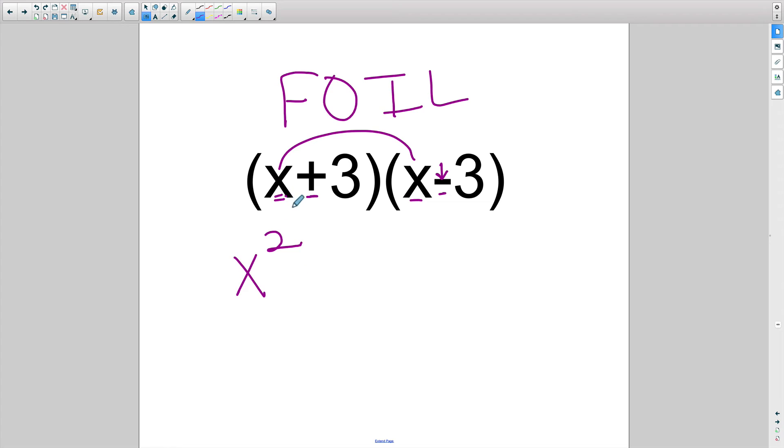And then I have a positive 3 times x in the inner part. So positive 3 times x is plus 3x. And then I have a positive 3 times a negative 3 here for my last. And that's going to be a negative 9. Be very careful when you have negative numbers when you're distributing.